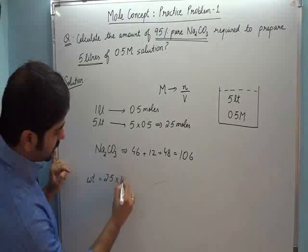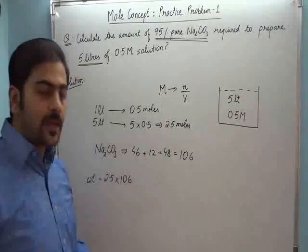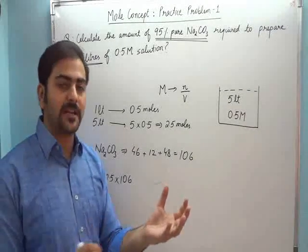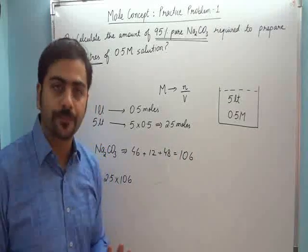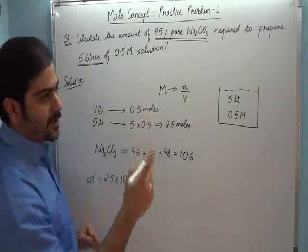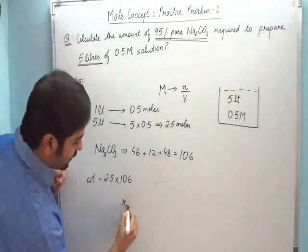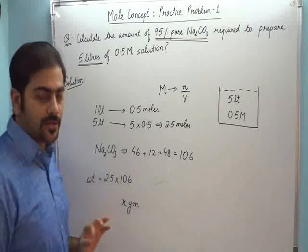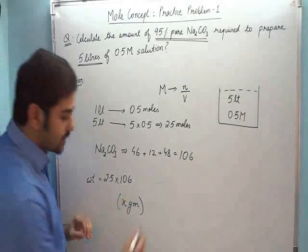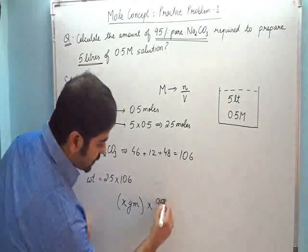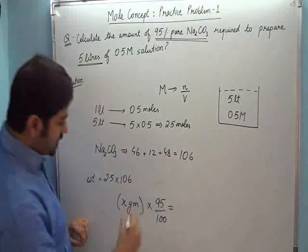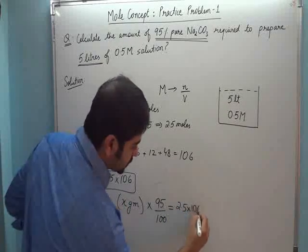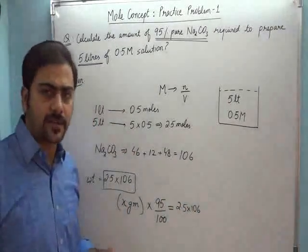So this many grams of Na₂CO₃ I need, which I will put in 5 liters of water to make a solution. But the problem is it's 95% pure, so let's suppose I have taken X grams of impure Na₂CO₃ which I bought from the market. X grams, its 95% should be equal to the required amount.